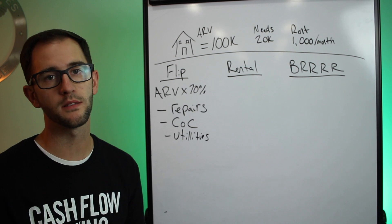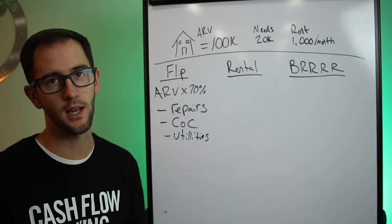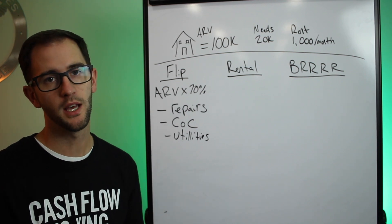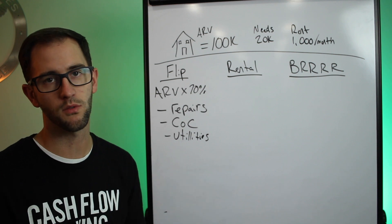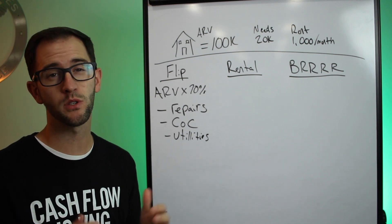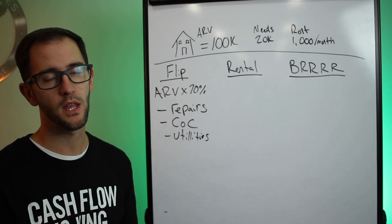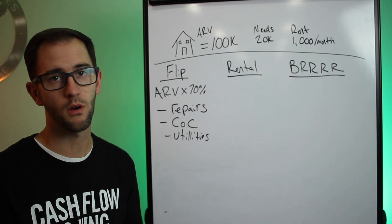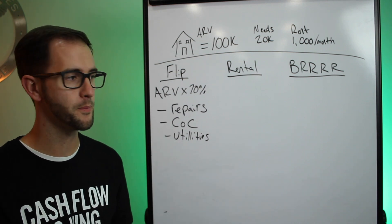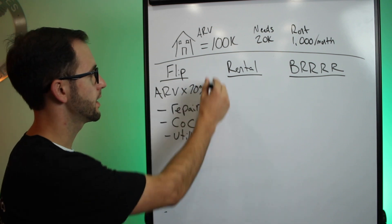And another big miss is utilities. Especially in the winter months, even in the summer, matter of fact, these bills can add up, especially if you're going to be in a project for approximately six months. I always run my numbers at at least six months, and we'll talk about more about that reason why when we look at the BRRRR model. But this is essentially how you come up with flip numbers.